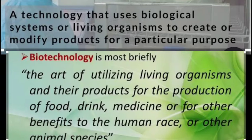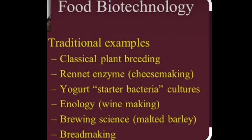After that we are getting insulin in large quantities without cutting or slaughtering calves. Biotechnology is also used in our food industry — that is called food biotechnology. Traditional examples include using microorganisms to produce new varieties of plants through classical plant breeding, the rennet enzyme used for making cheese, and starter bacteria cultures such as Lactobacillus bacteria, which are helpful in making curd into yoghurt.